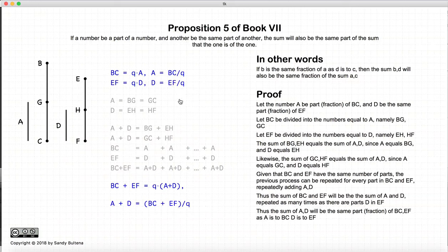So, that demonstrates that if a and d are the same fraction of bc and ef, if you add them together, a plus d will still be the same fraction of bc plus ef. So, this is the final proof.